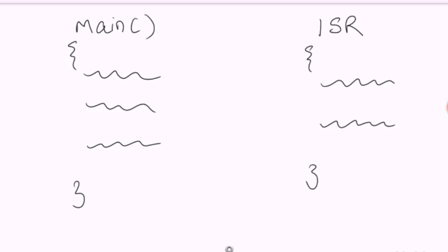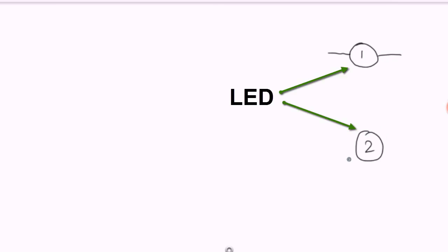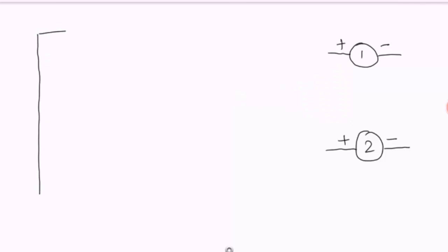Now that we understand the basic idea behind the interrupt working process, let's create a project using interrupts. Let's see what circuit we will build — we have two LEDs and the STM32F4 Discovery board.